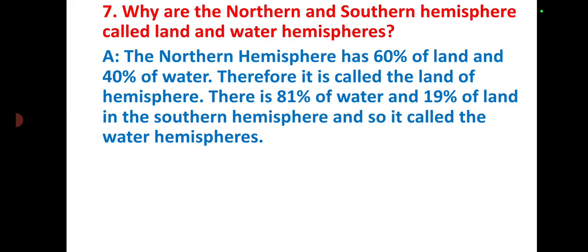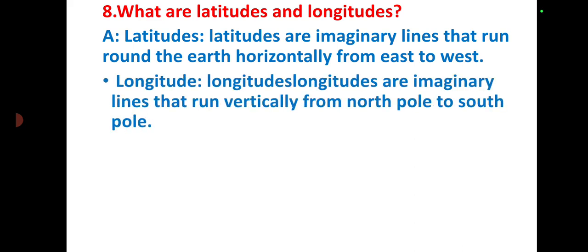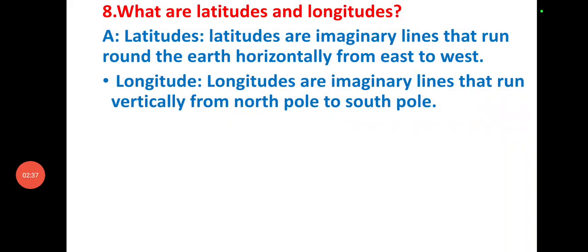What are latitudes and longitudes? Latitudes are imaginary lines that run around the Earth horizontally from east to west. Longitudes are imaginary lines that run vertically from north pole to south pole.